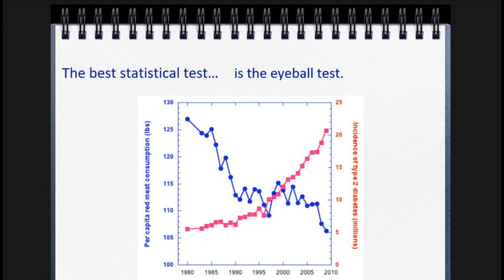The next slide shows the blue — the decline in red meat consumption over the past 30 years of what we call the obesity epidemic. And it's a significant drop, not a small number. And the red shows the increase in type 2 diabetes. So it just doesn't make sense that those things are correlated. I think of the useful part of statistics as being something that's simple and straightforward, and you don't need somebody to put a name on it.